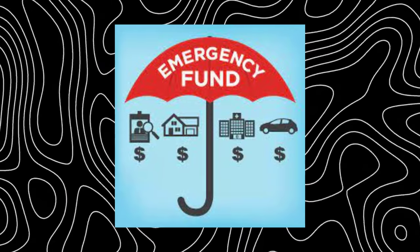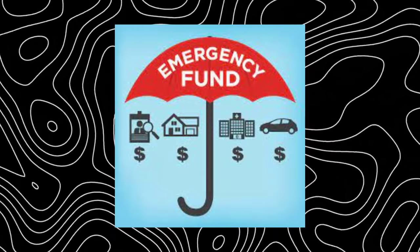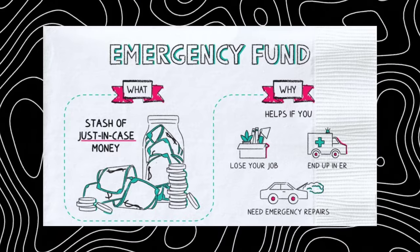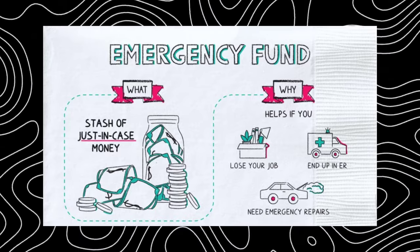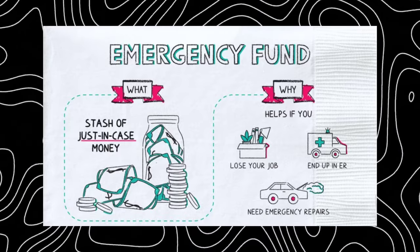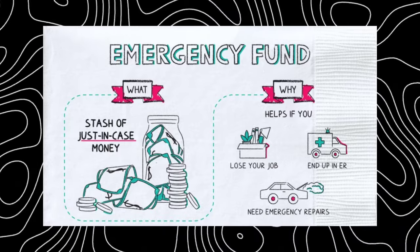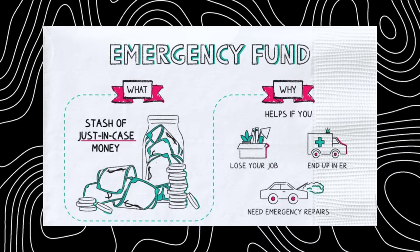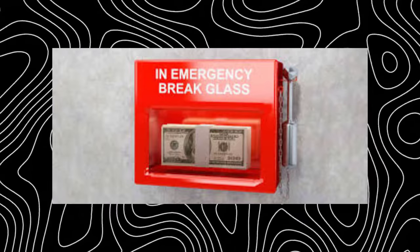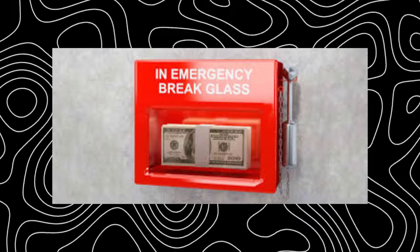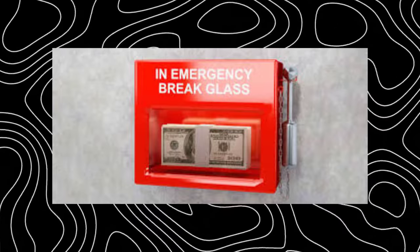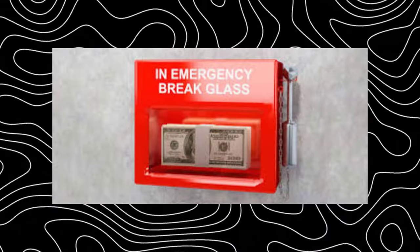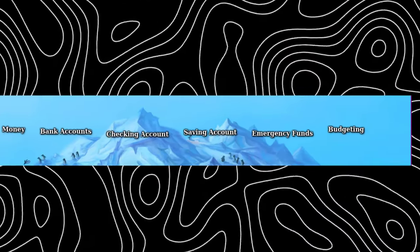Emergency fund: just like your savings account, this money is put to a purpose. An emergency fund is your financial safety net for unexpected expenses like medical bills, car repairs, or sudden job loss. This fund should be separate from your normal savings. Experts recommend having at least three to six months' worth of living expenses saved up, and you should only touch it in an emergency. I recommend keeping it in a separate bank account for that mental layer of separation.